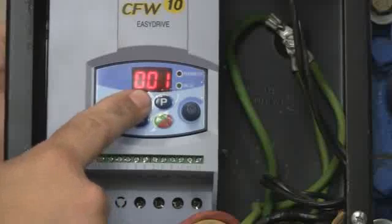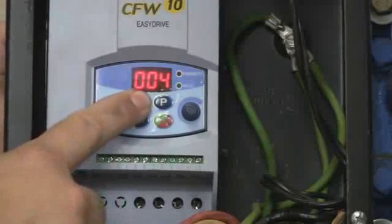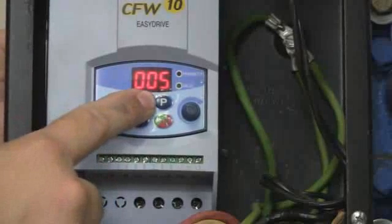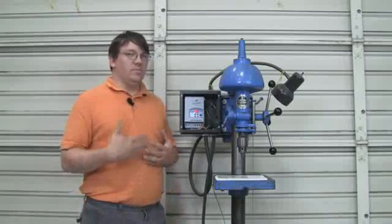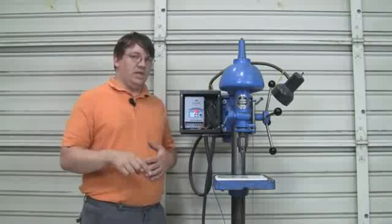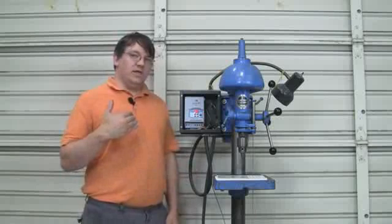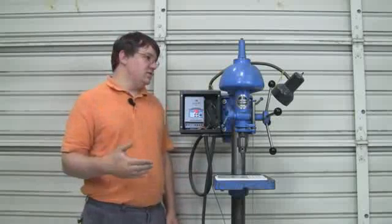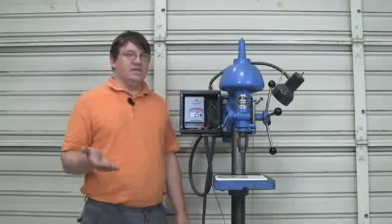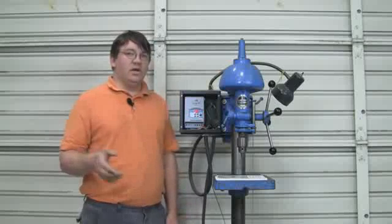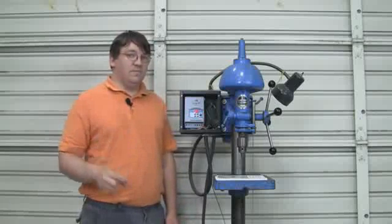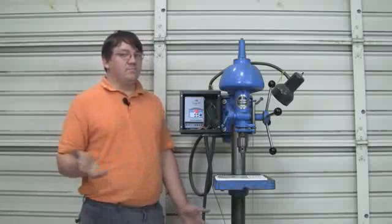The value layer is underneath that. When you press program, you switch to the value layer. This is the value you're setting that parameter to. For example, with motor speed, if I go into that parameter and hit program, it'll show me the default speed. I can then set what my motor speed is. If I have a 1700 RPM motor, I can set 1700 RPM, press program again to save it, and you're done.